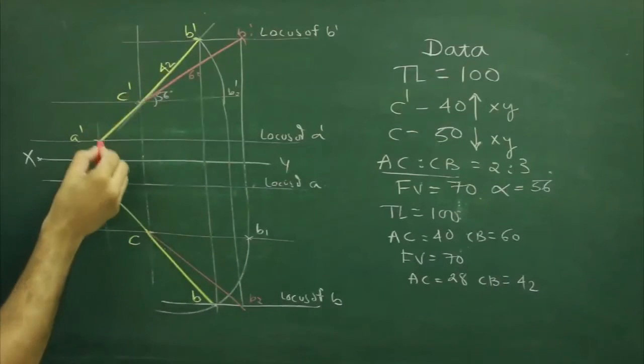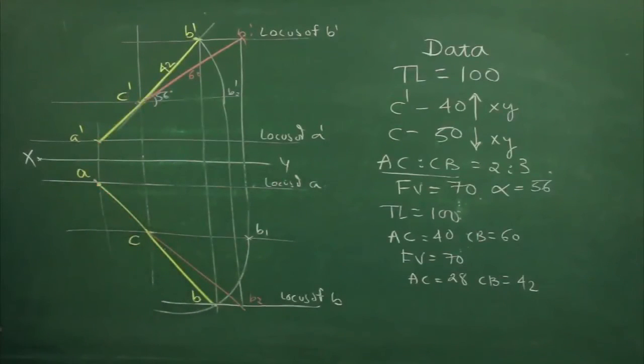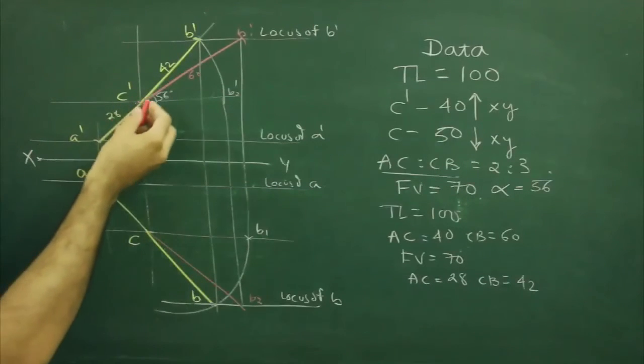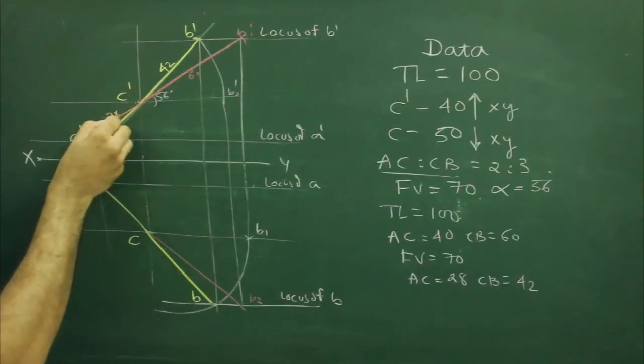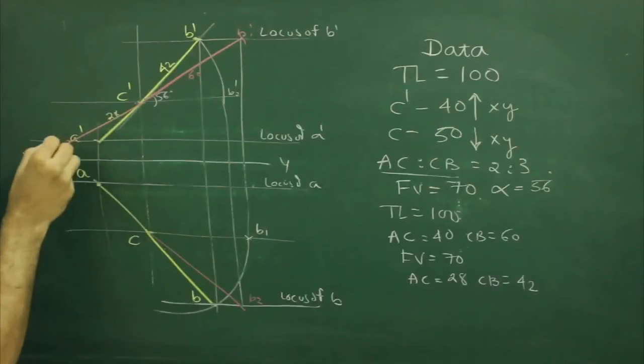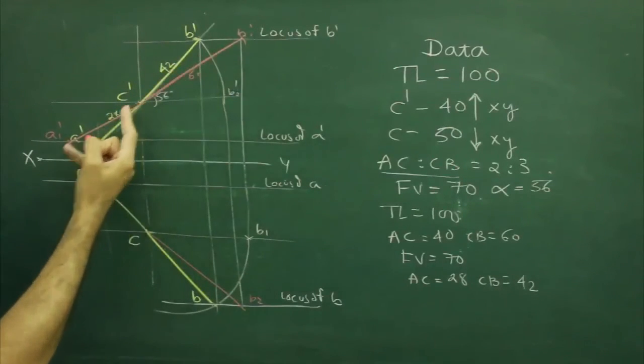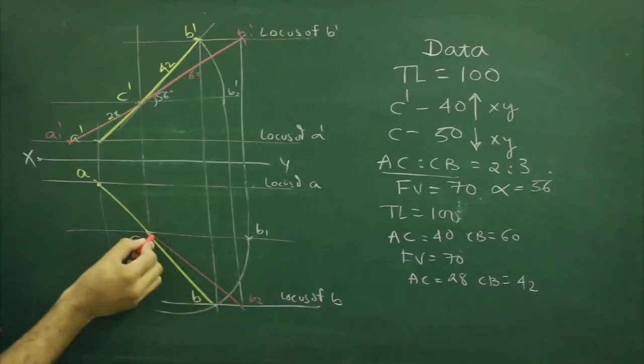So we got front view as well as top view. Now to find out true length, remaining true length or we can extend this, it will cut here. That is A1 dash and if you want to check it will be 40 only. Same way we can extend here also.